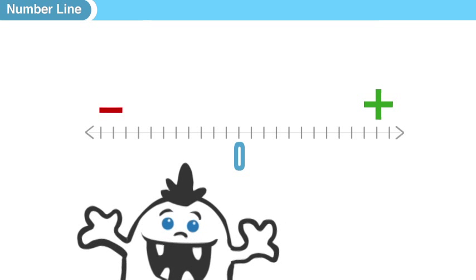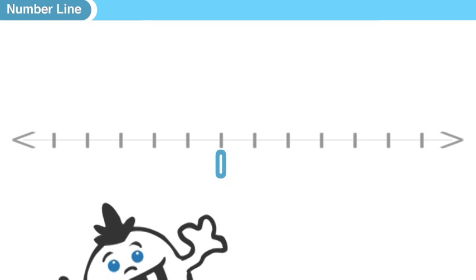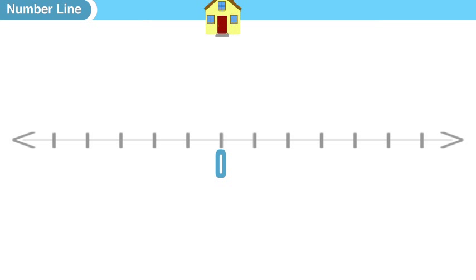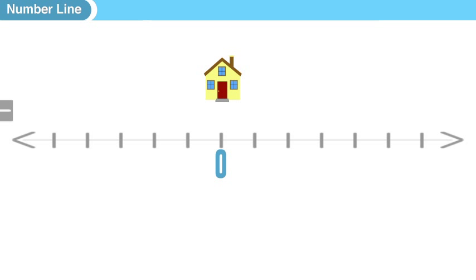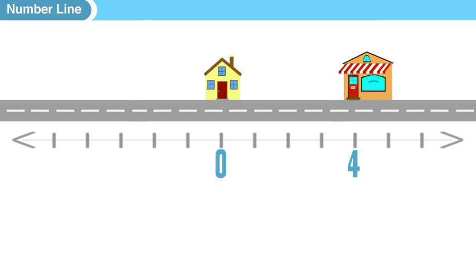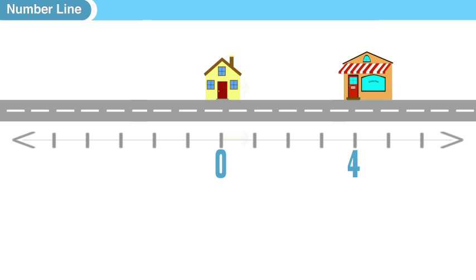Let's look at an example from real life. We have a number line here — think of it like a trip from home. Let's say you live in a small town with only one street, and you want to go to the grocery store, which is four miles to the east. You start by going four miles east, then you turn around and come home. We're going to call zero the home — that's where you live.